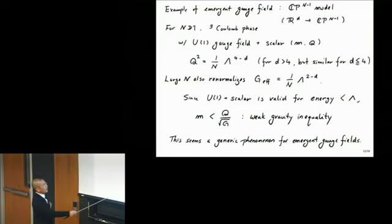Charge is, so this is an emergent gauge field, so the charge is given by this cutoff to the power 4 minus D. When N is large, this renormalizes the Newton constant. If you require that this description is low energy description for scale much less than lambda, mass has to be less than lambda, strictly less than lambda. So again, you get weak gravity inequality without equality.